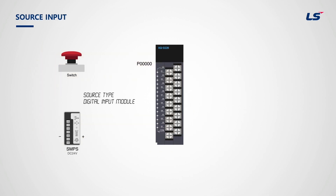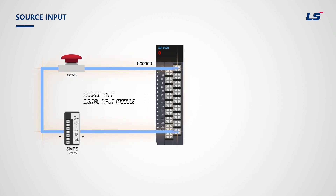This is the source type digital input module. The COM terminal for the source type input module is connected to the DC 24 voltage power source. This shows how the current flows from the PLC, so it is called the source type.